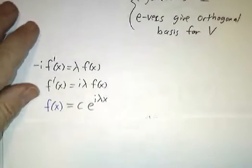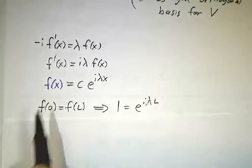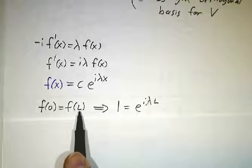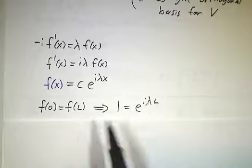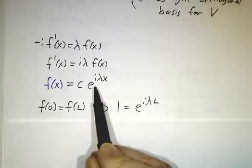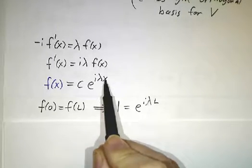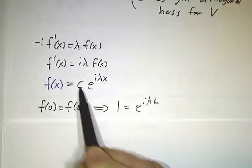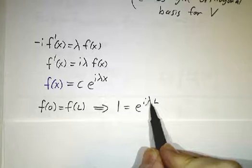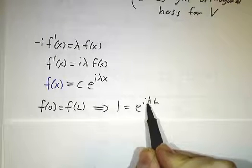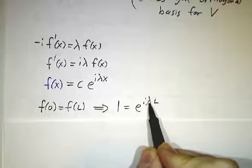And now we're applying periodic boundary conditions, which means that the value at 0 and at L have to be the same. Which means that if you plug in L, you have to get e to the i L x times c equals c. In other words, e to the i lambda L has to be 1.